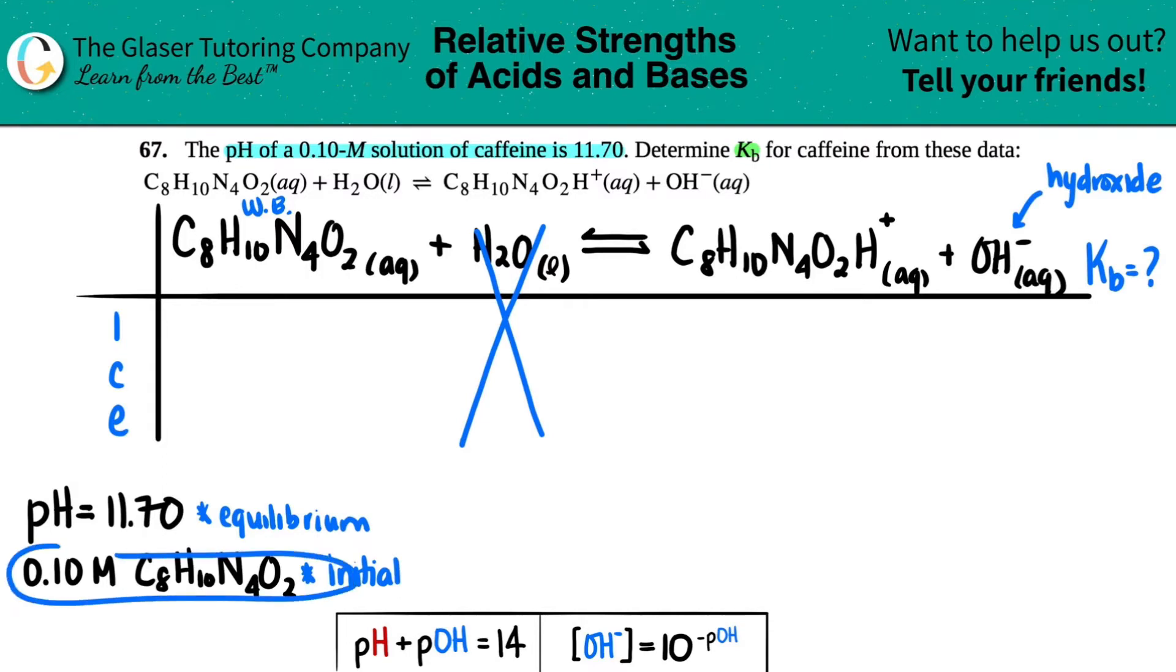So initially, they told us that we had 0.1 molarity of the caffeine. This was the caffeine. So I'm going to put that up here, 0.10. Now I come over here to my ions. They didn't say anything about having ions in the beginning. So I have to assume that I have 0 and 0 of it.